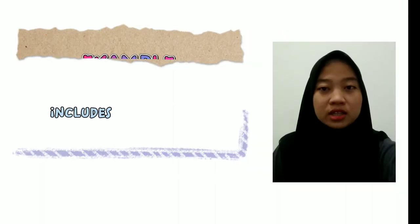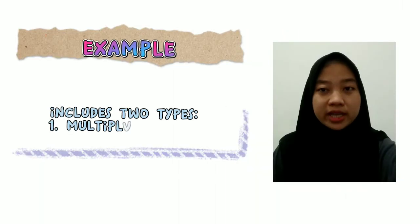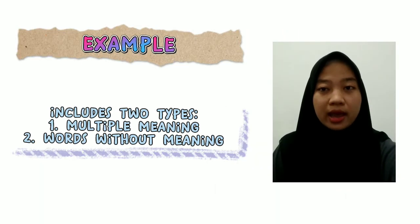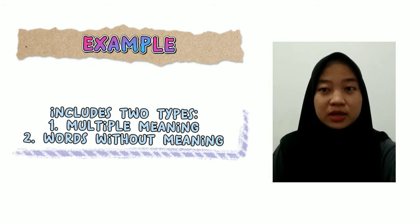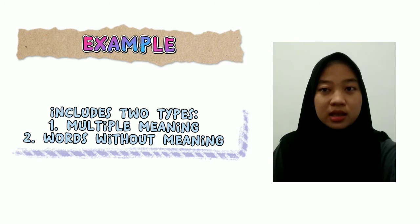For the last point, I have some examples of semantics. The examples are divided into two parts: the first is multiple meaning, and the second is words without meaning.